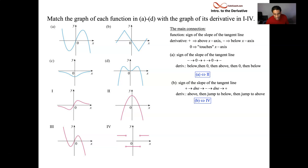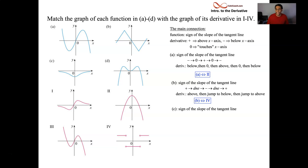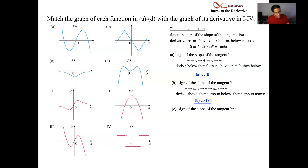So we have C and D, and we need to pair them with one or three. The difference: C has a zero-sloping tangent line once, while D has a zero-sloping tangent line three different times. The graph of the derivative of C should only come into contact with the x-axis once, while the derivative of D should come into contact with the x-axis three different times. So definitely C goes with Roman numeral one, and D goes with Roman numeral three.